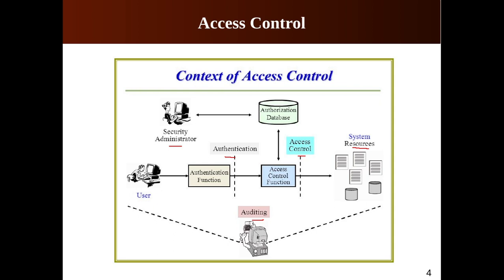The first element is authentication — the verification that credentials like password and username of a user or other system entity are valid. This process verifies that the credentials provided by a user are actually valid. Once authentication is provided, you need to authorize the grants allocated to that user.